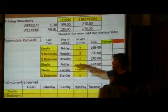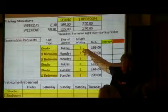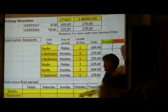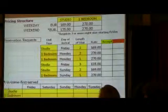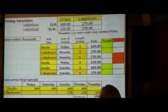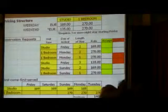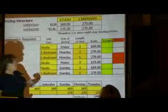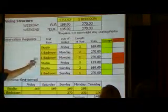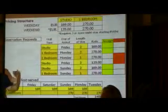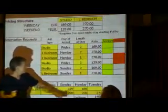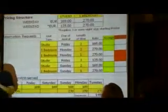Then we get a request for a studio arriving Friday for three nights — we'd have to say no because we've already sold the studio there. So if we took that business on a first-come-first-serve basis, we would make €1,480. We'd accept the first two because we have availability, decline requests three and four because we don't, then accept the last two because availability exists for those.